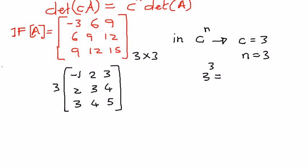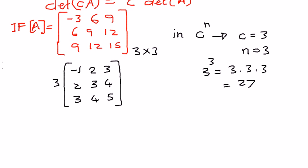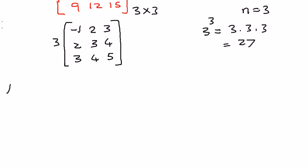Therefore, we can write c to the power of n as 3 to the power of 3, which is 3 times 3 times 3. 3 times 3 is 9, and 9 times 3 is 27. So 3 to the power of 3 equals 27. To find the determinant of this matrix, we apply the property: c to the power of n — that is 3 to the power of 3 — times the determinant of the simplified matrix.